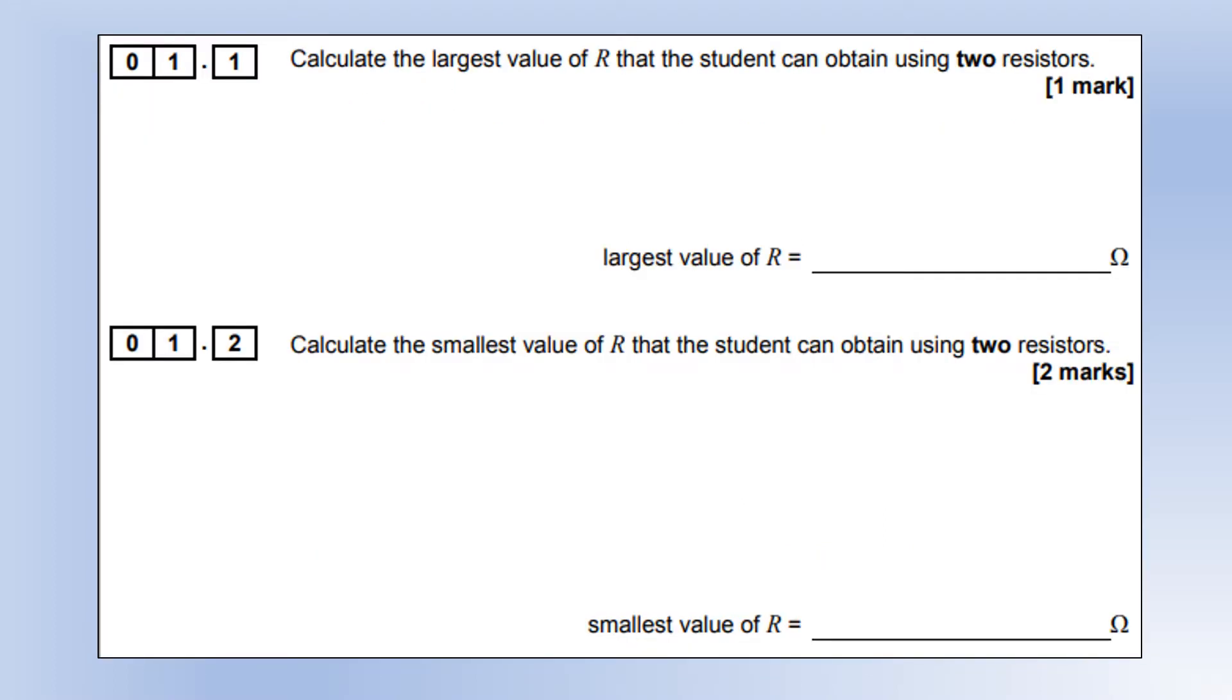To calculate the largest value of resistance the student can obtain, it's going to be from the two biggest resistors in series, and the smallest is going to be the two smallest resistors in parallel. So fairly straightforward so far.